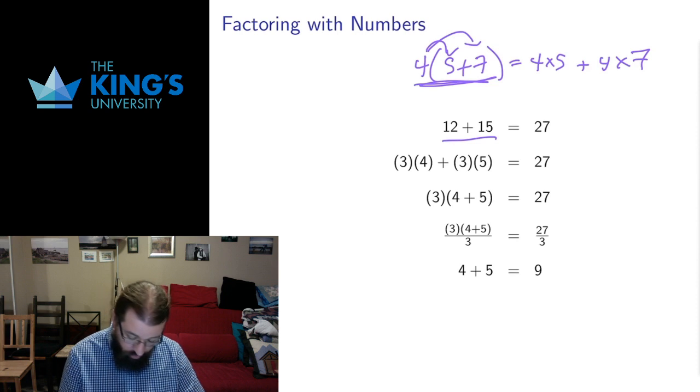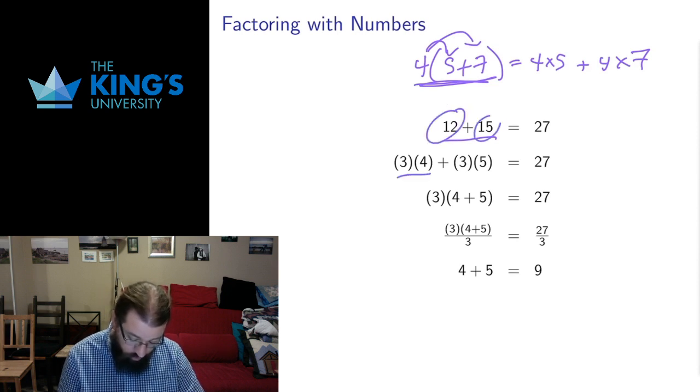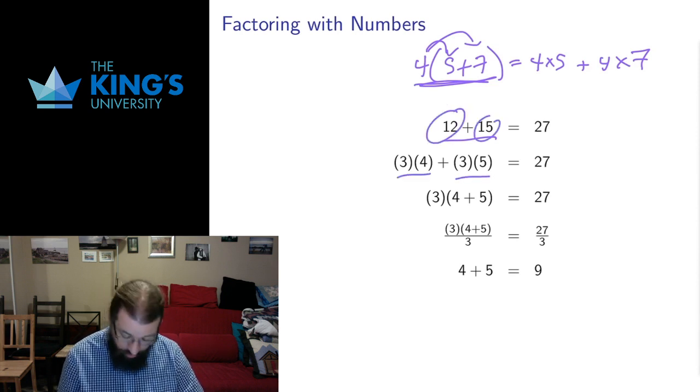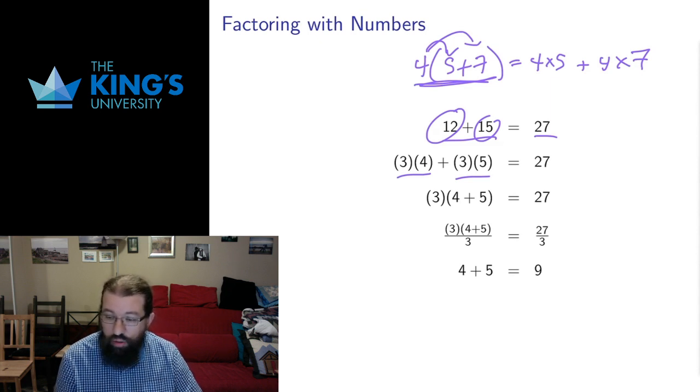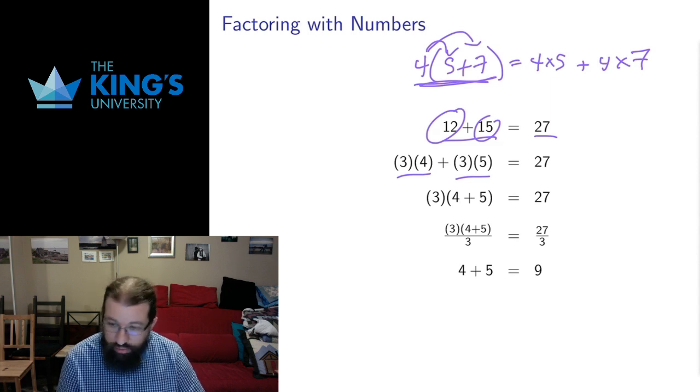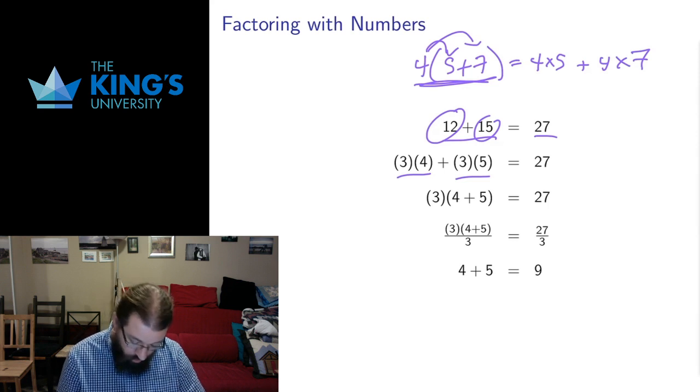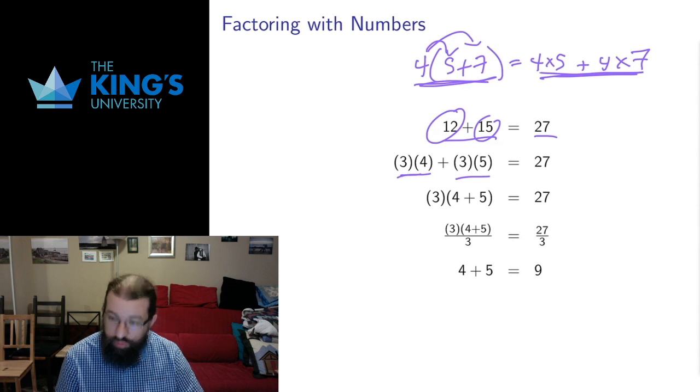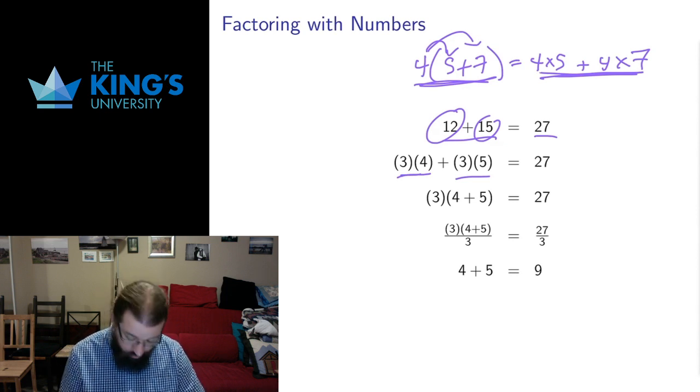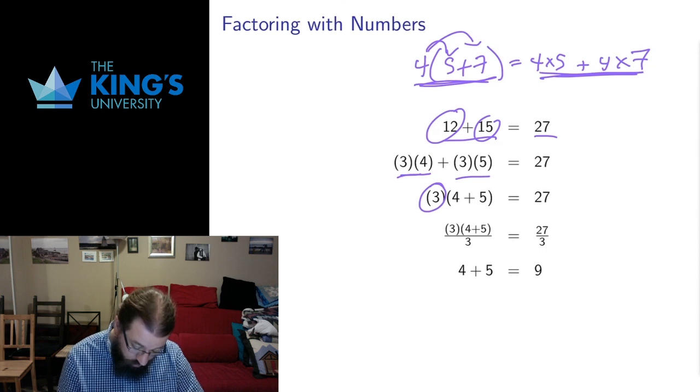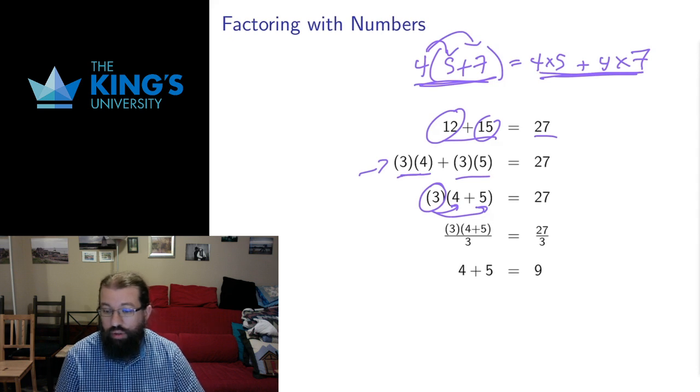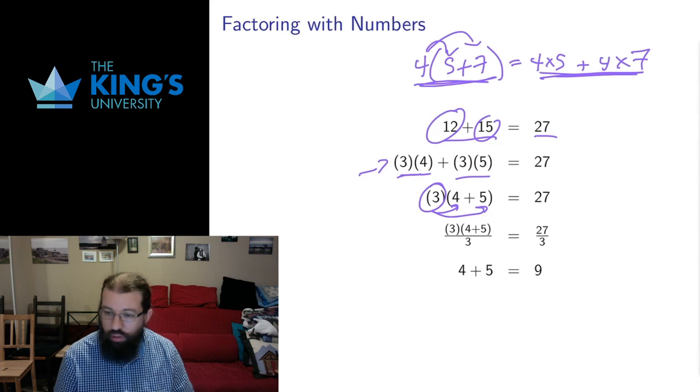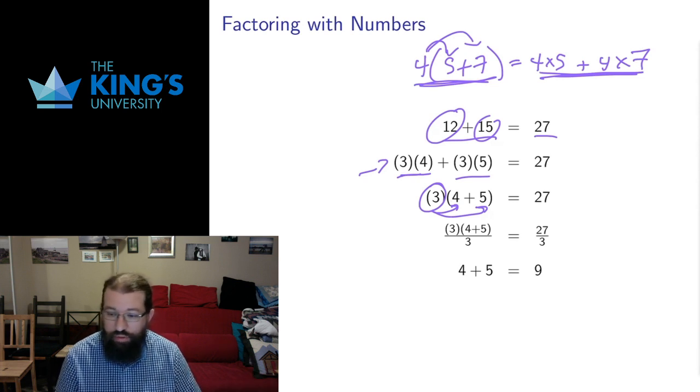In this case the common factor is 3. 12 is 3 times 4, 15 is 3 times 5, and also the other side of this equation, 3 is also a factor of 27. But I'll deal with the left side for now. So this looks a lot like this right side after distribution. So I can go backwards. I can undo the distribution and pull the 3 out here, this common factor, because it would distribute over the 4 and the 5 and give me back what I started with. So factoring is pulling out those common factors and writing them before the application of the distribution law.